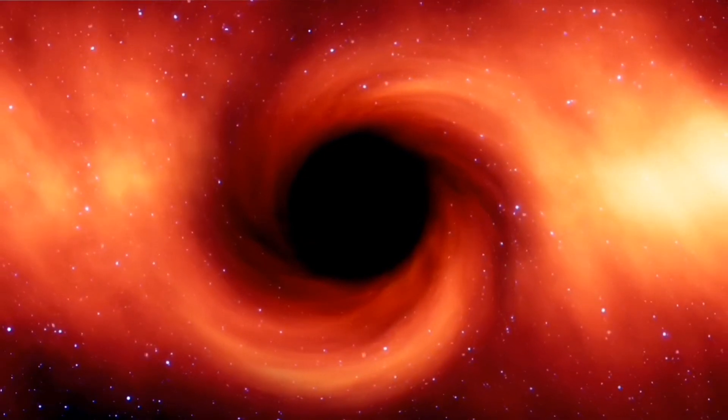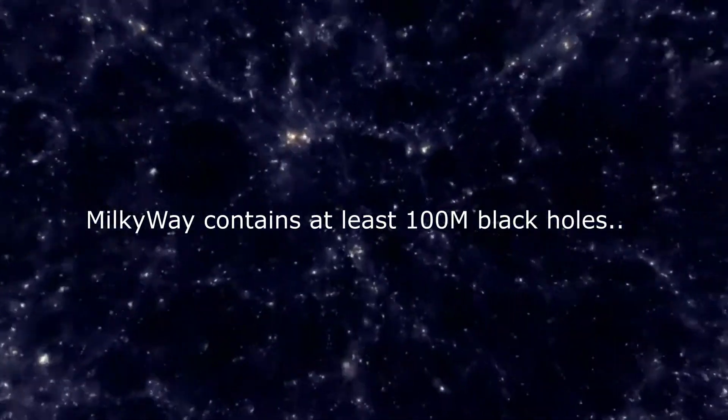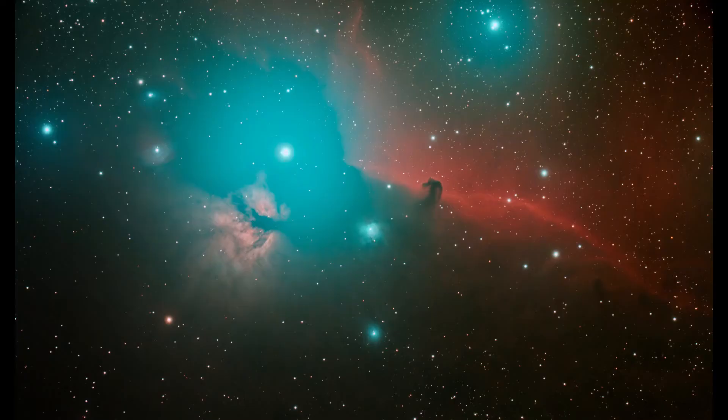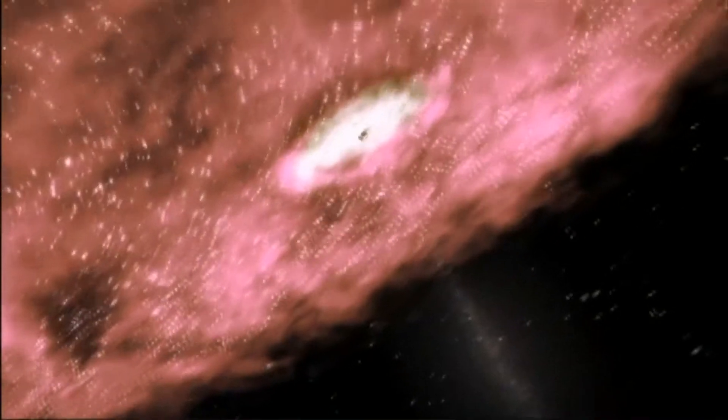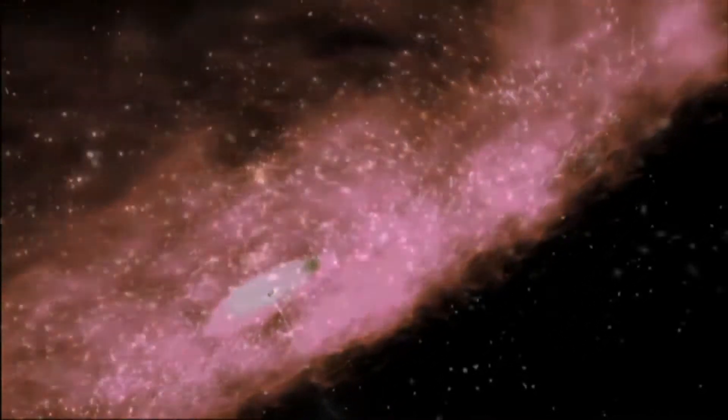The Milky Way contains about 100 million black holes, which were formed by the collapse of very massive stars. A very few of these black holes are closely orbited by an ordinary star that is slowly bleeding matter onto the black hole.